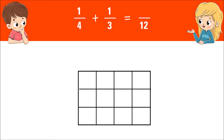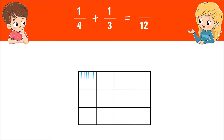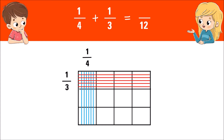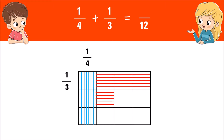For one fourth, fill one of the four columns with vertical lines. To represent one third, fill the first row with horizontal lines. For the box with both vertical and horizontal lines, move the horizontal lines to an empty box. The boxes with vertical and horizontal lines represent the sum and will become your new numerator.